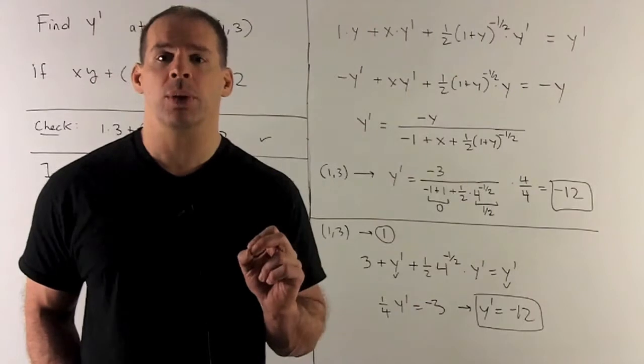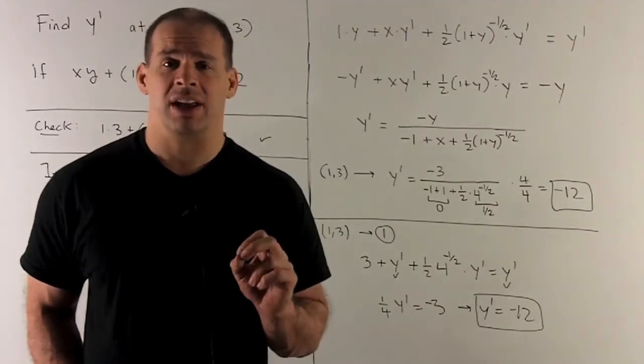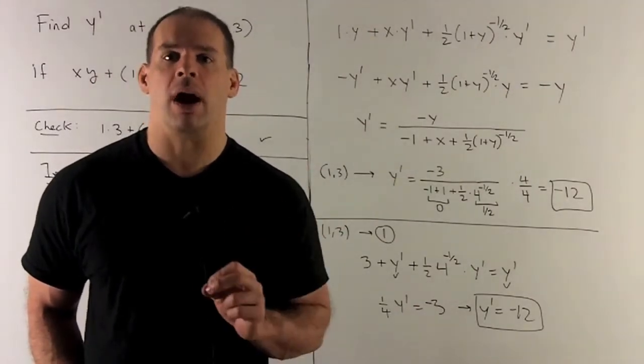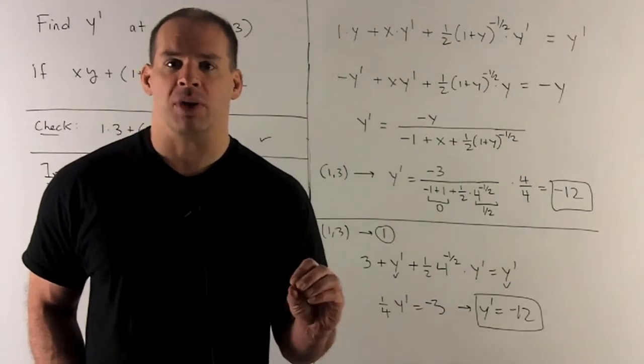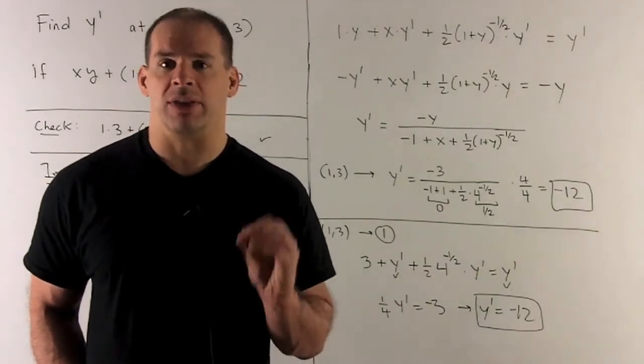On the other side, we have y plus two. The derivative with respect to x. And that's just going to give me y prime. So we've taken all our derivatives. So now we just want to isolate the y prime.